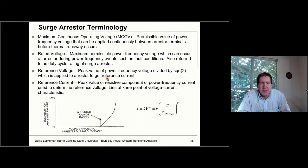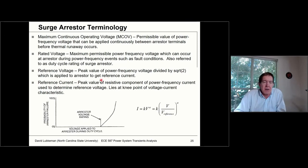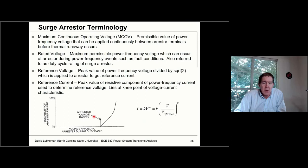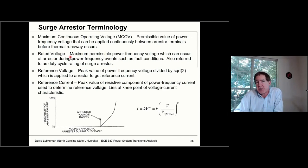There's also a rated voltage for the arrestor, a bit higher than MCOV. This is the maximum voltage during normal power frequency events — 60 Hz type events — such as fault conditions or ferroresonance. As far as IV characteristics, there's a reference voltage and reference current used for figuring out the I-versus-V characteristics. We must keep the voltage across the arrestor below these two values under normal conditions, including faults, otherwise we can actually destroy the arrestor in the field.